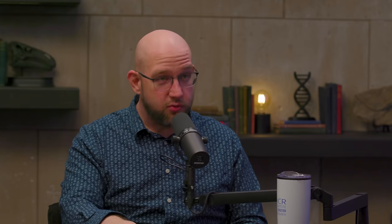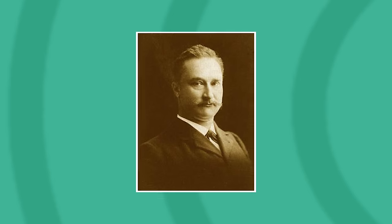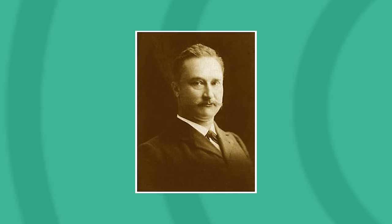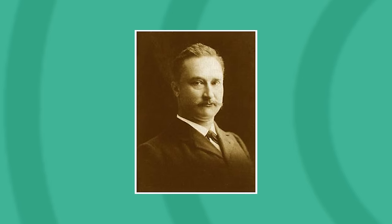Eugene Dubois discovered Java Man on the Island of Java in 1891 — so this is not a new discussion. He was already a major supporter of Darwin. He was an anatomist, but he only found a couple of pieces of this specimen, and he declared it a transitional form.